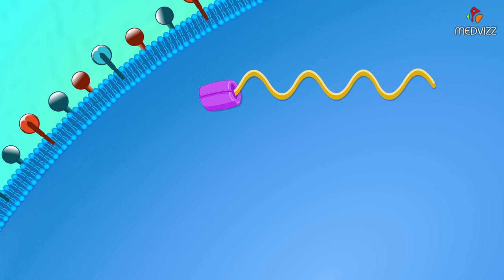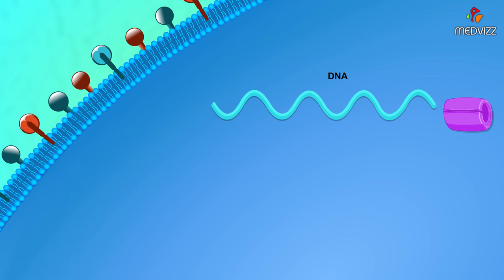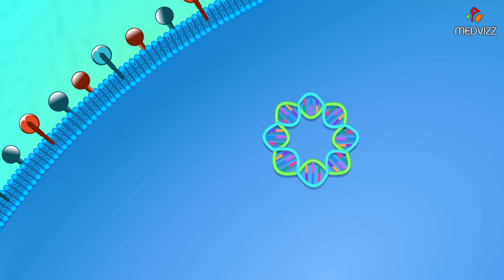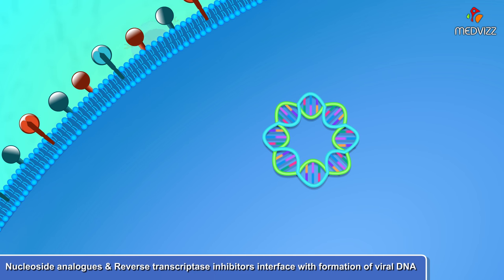reverse transcriptase makes a DNA copy of the viral RNA genome. As the DNA is being formed, reverse transcriptase degrades the RNA strand. A complementary DNA strand is then added by the reverse transcriptase, and the ends of the resulting double-stranded DNA segment are joined non-covalently. Treatment with nucleoside analogues or reverse transcriptase inhibitors interferes with these steps.